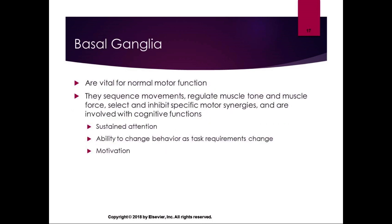We talked about the basal ganglia in a previous chapter — we know they're vital for normal motor function, and they also function in cognitive areas and motivation. The basal ganglia sequence movement, regulate muscle tone and muscle force, and select and inhibit specific motor synergies. They're also involved with cognitive functions of sustained attention, the ability to change behavior as task requirements change, quick task-switching, and motivation. It's a huge area, and we'll talk about some of those areas in the next module.